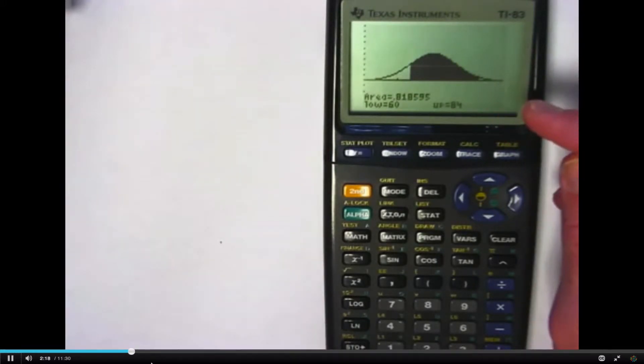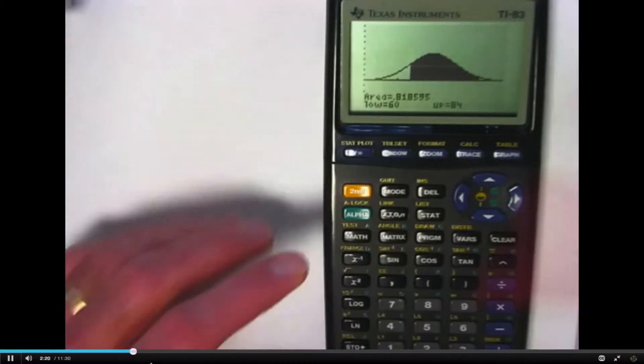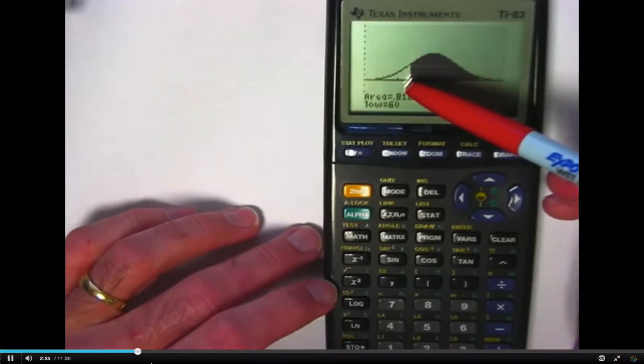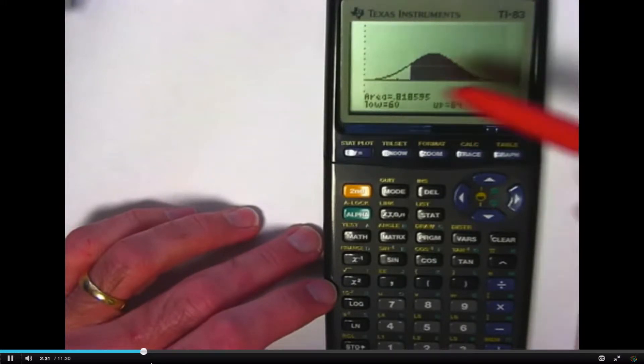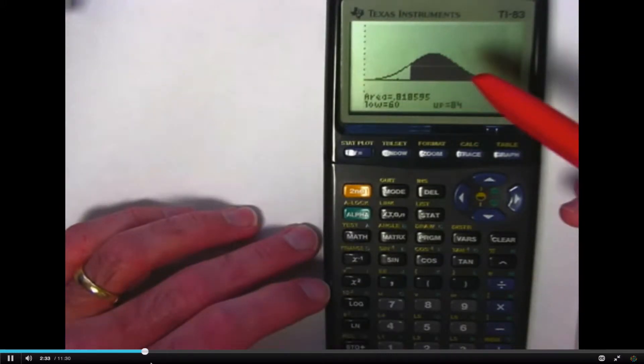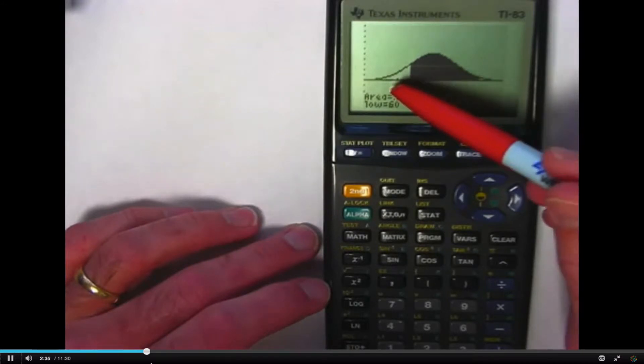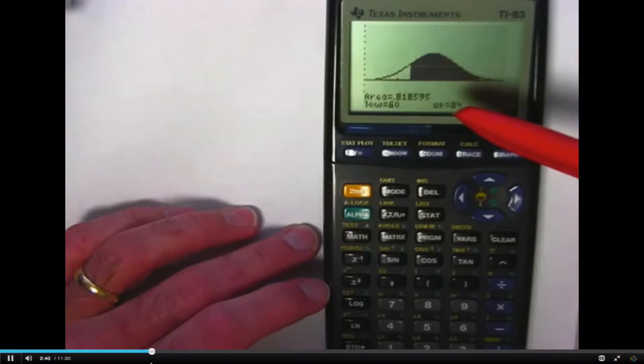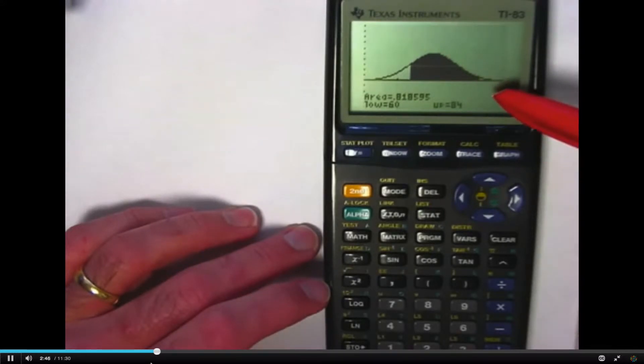Something kind of disappointed me here. The mean, 68 is right about there. This is 60 right here, which is one standard deviation below the mean. This other tick mark here, I think I put the tick marks 8 units apart, is two standard deviations below the mean. Seems like it should be a little bit further to the left than it is. There, at the right endpoint of the shaded region, that's 84, that's two standard deviations above the mean.